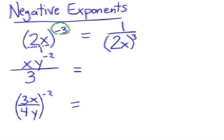So the power now becomes positive. Now, just to finish this problem, the third power on the outside applies to the 2 and to the x. And so my final simplified answer would be 1 over 8x to the third.